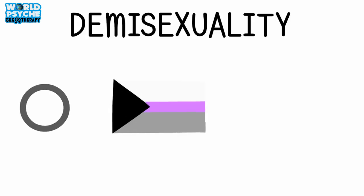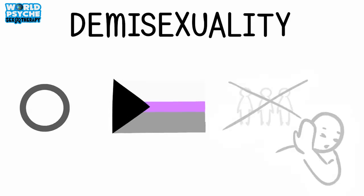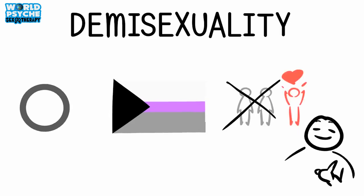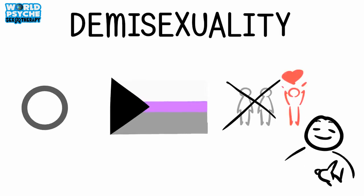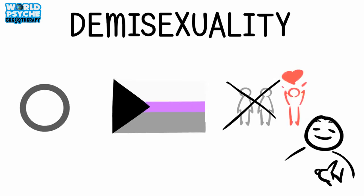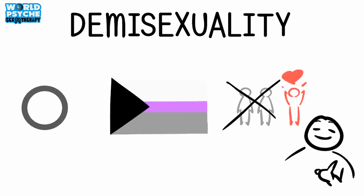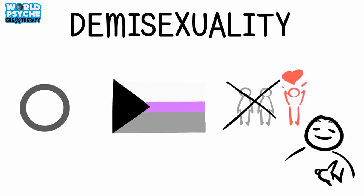8. Demisexuality. Demisexuality can technically fall under the asexual umbrella. People who are demisexual do experience sexual attraction, but only after an emotional connection is created. They wouldn't find a stranger on the street sexually appealing, but after they get to know someone well, the possibility of sexual attraction is there. Demisexuality is considered the halfway point between asexuality and allosexuality, those who experience sexual attraction.